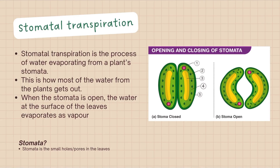Stomatal transpiration is the process of water evaporating from a plant's stomata. This is how most of the water from a plant gets out. When the stomata is open, the water at the surface of the leaves evaporates as vapor.